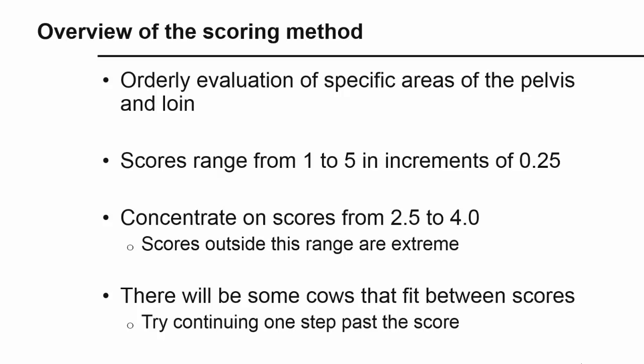Even with a structured system such as this, some cows will fall between the categories described. In this case, you must use your judgment to decide which score best fits each cow. As you assign scores, it may be helpful to continue one step past the score you think the cow should receive. This allows you a second opportunity to consider her final body condition score.